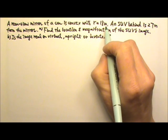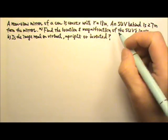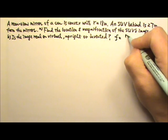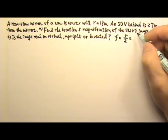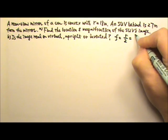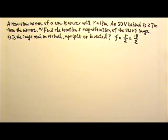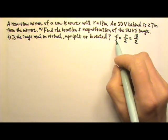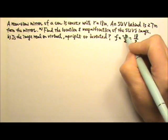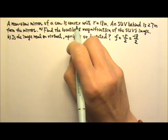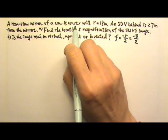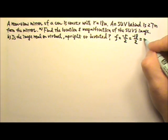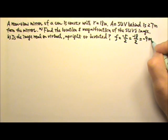It is a spherical mirror with radius 18 meters. The focal length is half the radius, which is half of 18. But because this is a convex mirror, the focal length is negative because a convex mirror does not focus light — it diverges light instead. So the focal length is negative 9 meters.